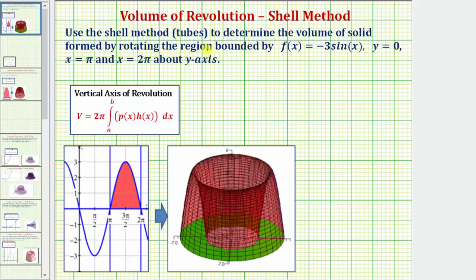We're asked to use the shell method or tubes method to determine the volume of solid formed by rotating the region bounded by f(x) equals negative three sine x, y equals zero, x equals pi, and x equals two pi about the y-axis.